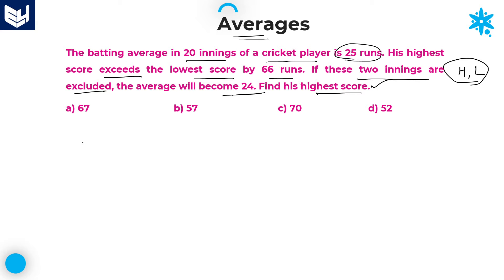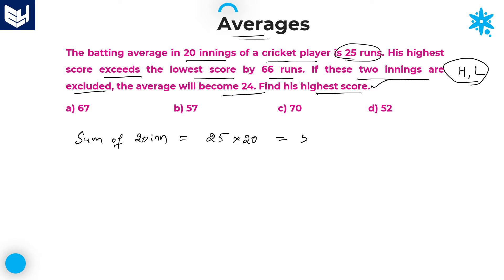According to the first sentence, the batting average in 20 innings is given as 25 runs. Therefore, the sum of 20 innings equals average into number of innings, which is 25 into 20, equal to 500 runs.